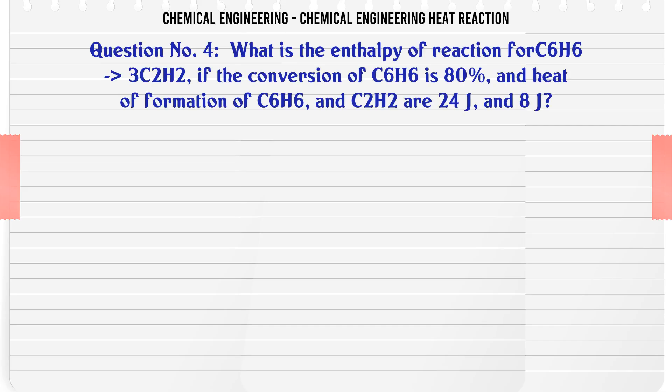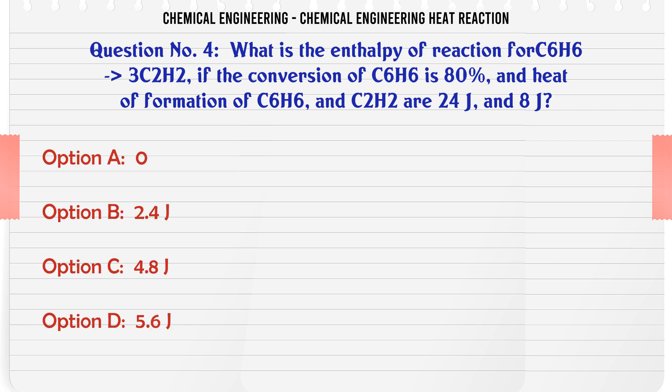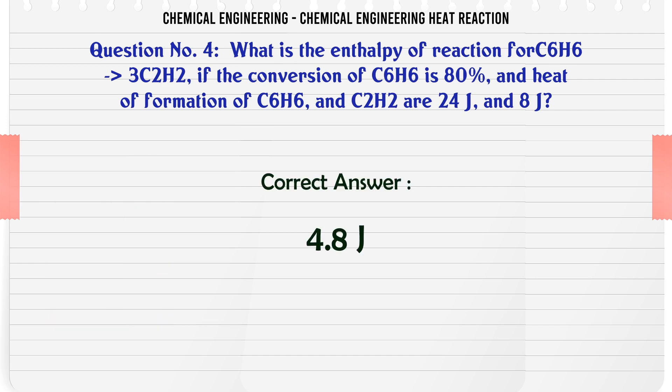What is the enthalpy of reaction for C6H6 → 3C2H2 if the conversion of C6H6 is 80% and heat of formation of C6H6 and C2H2 are 24J and 8J? A: 0, B: 2.4J, C: 4.8J, D: 5.6J. The correct answer is 4.8J.